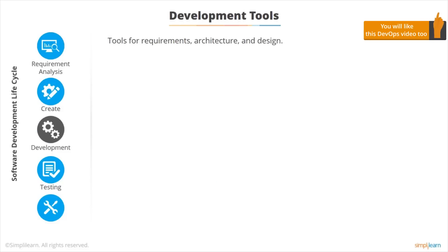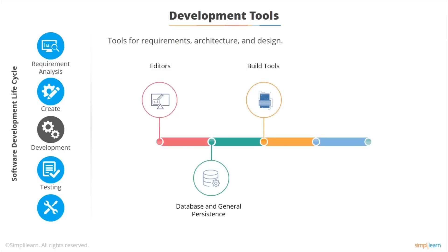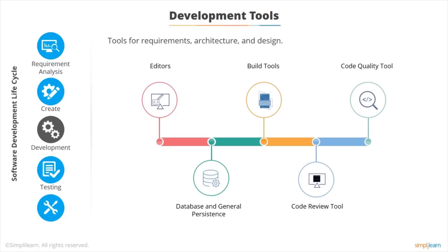The most complex stage of any software development is the code development stage and there are many tools needed at this stage. There's a variety of different editors. We need different databases, different types of databases, different tools for building the software. We need tools for code review. There are also very important code quality tools which can assess the quality of the code and identify common problems very quickly.